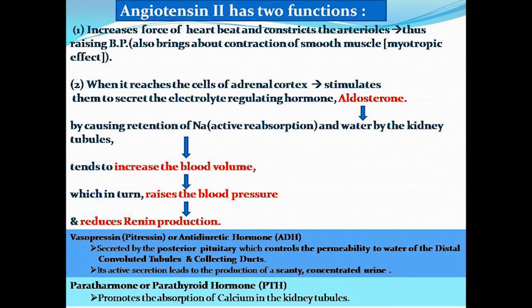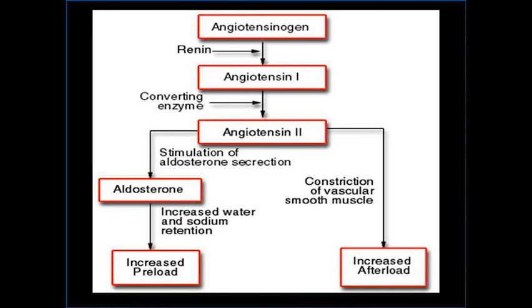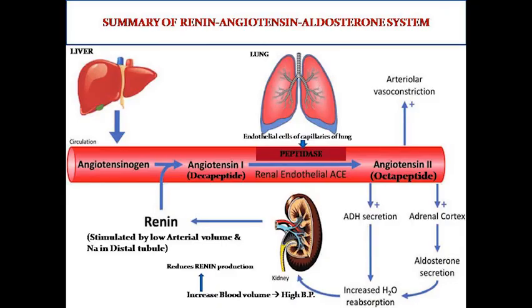Now we will explain this graphically. Angiotensinogen is acted on by renin, producing angiotensin-1. Then the converting enzyme — peptidase — converts angiotensin-1 (decapeptide) into angiotensin-2 (octapeptide), which is the active form. After stimulation of aldosterone secretion, water and sodium retention increase, leading to increased preload. Angiotensin-2 also causes vascular smooth muscle constriction, increasing afterload.